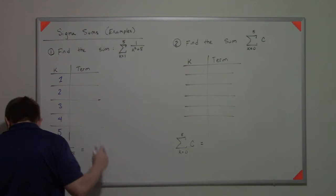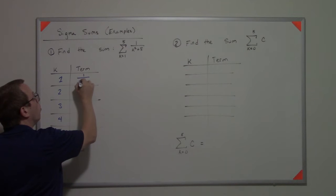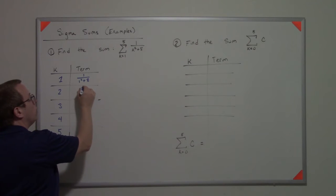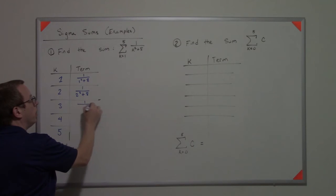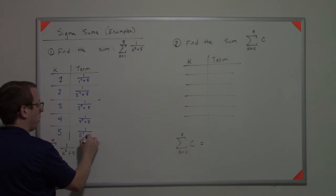So if we do one over k squared plus eight, we do one over one squared plus eight, one over two squared plus eight, one over three squared plus eight, one over four squared plus eight, and one over five squared plus eight.